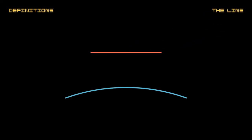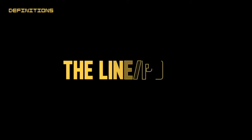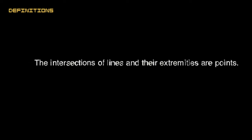A line is a length without breadth. Like a dot, a line that is already invisible — a line 100 times thinner than the first line is drawn here. If you make it infinitely thinner so that it has no width, that is a line. The intersections of lines and their extremities are points.